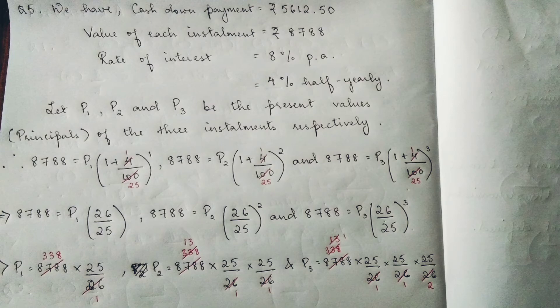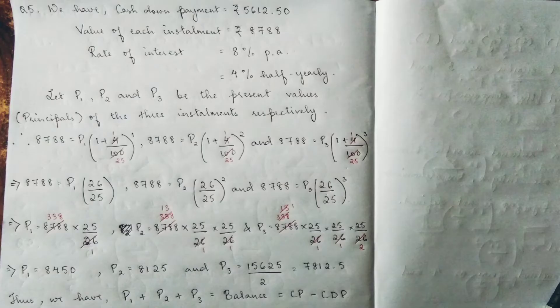So for P1, we have 338 into 25 which is 8,450. For P2, we have 13 into 25 into 25 which is 8,125. And for P3, we have 15625 divided by 2 which is 7812.5.